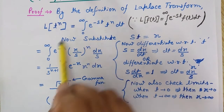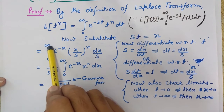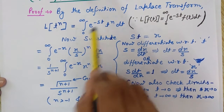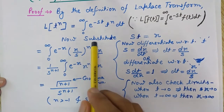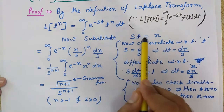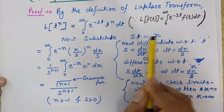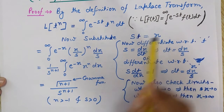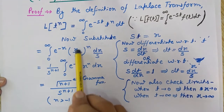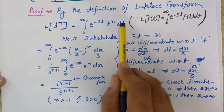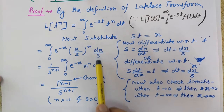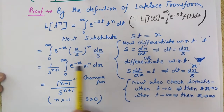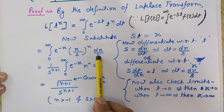Now substituting back: the limits are 0 to infinity, e to the power minus x replaces e to the power minus st, t is replaced by x/s so t to the power n becomes (x/s) to the power n, and dt is replaced by dx/s.